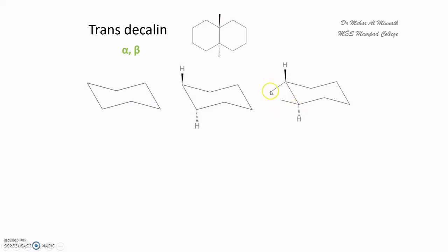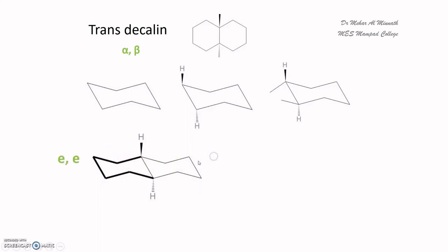Completing the other ring in chair form, we can see that both rings are fused in an equatorial-equatorial (EE) arrangement. Because the substituents are in the equatorial position, this conformer has the least energy. The contribution from equatorial substituents is nil because they subtend an anti-butane (anti-gauche) relationship.